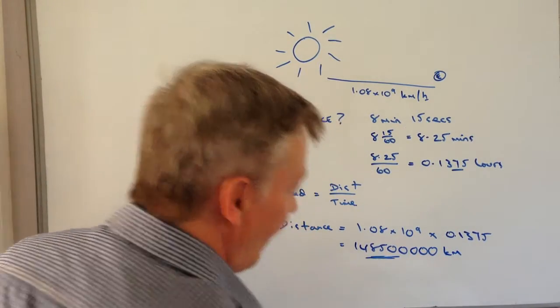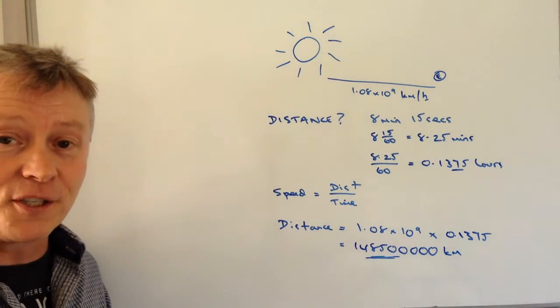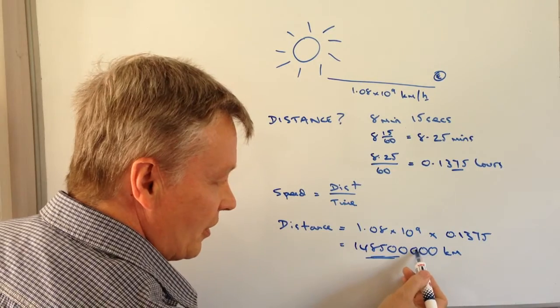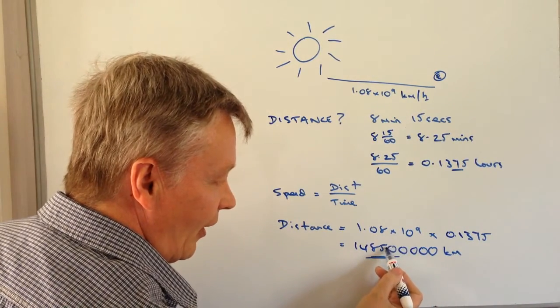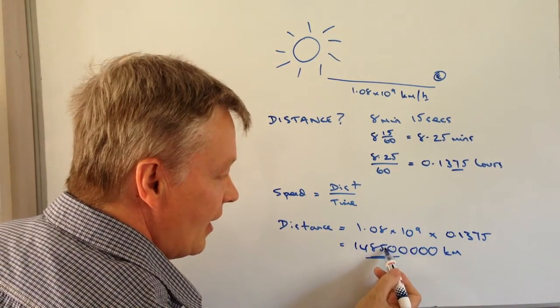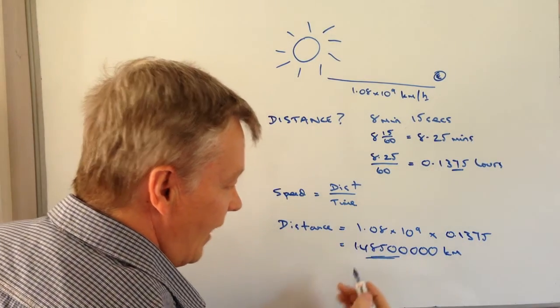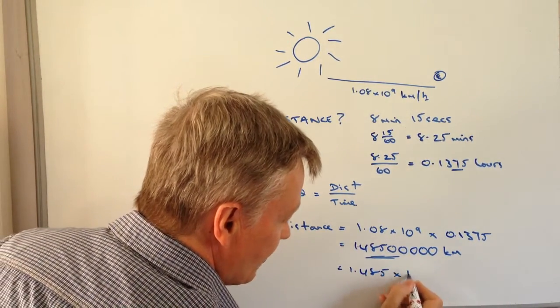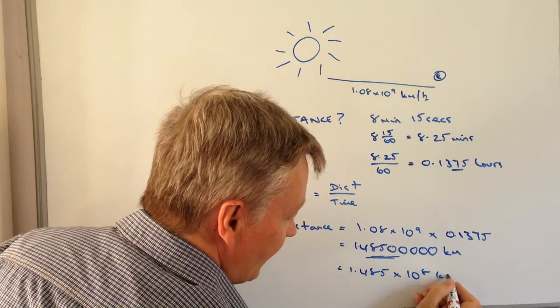I think they do ask us to put that into standard form. So I'm going to count the number of zeros: 1, 2, 3, 4, 5, and then the decimal places: 6, 7, 8. So that's 1.485 times 10 to the power of 8 kilometers.